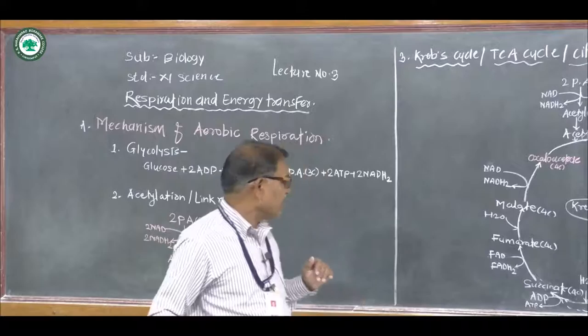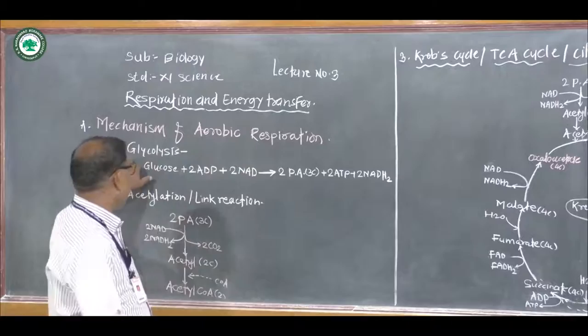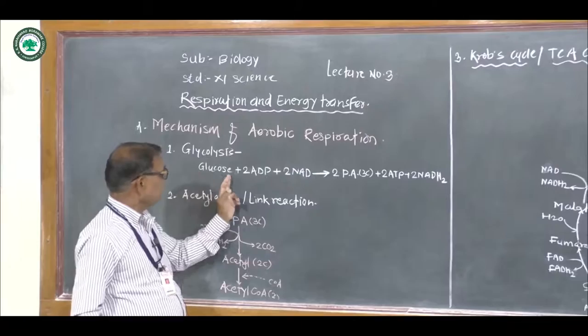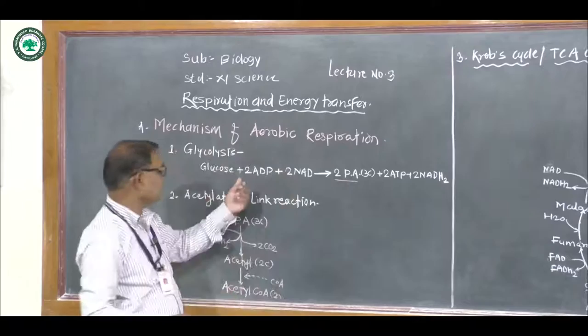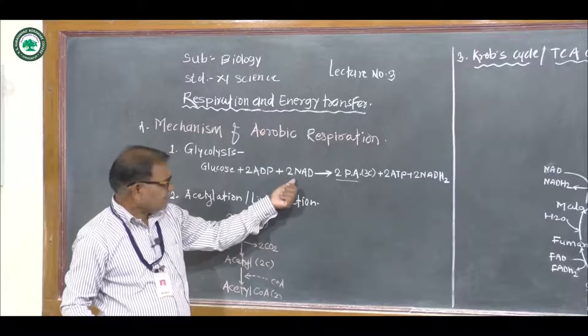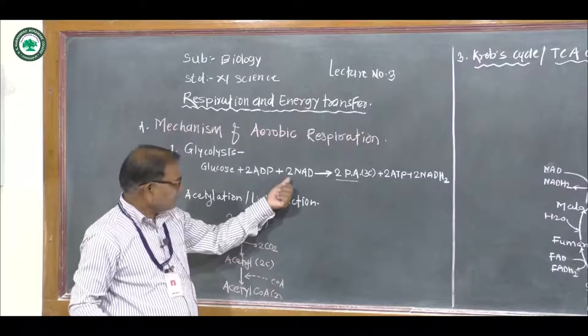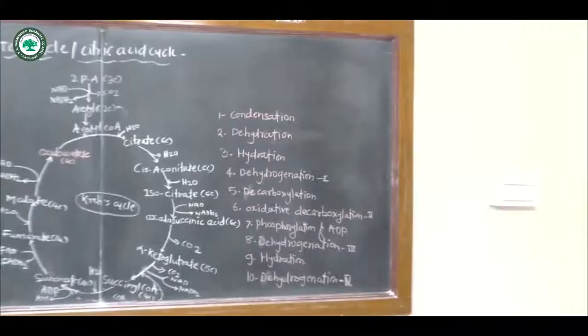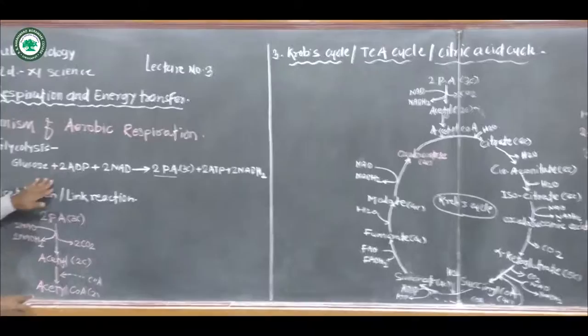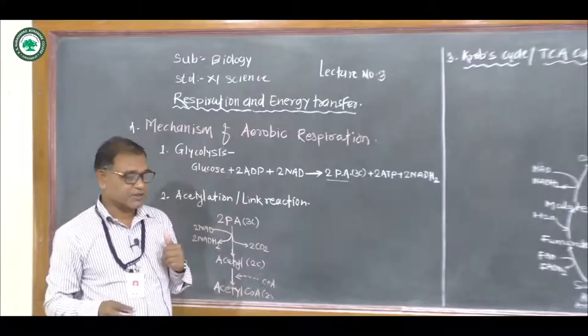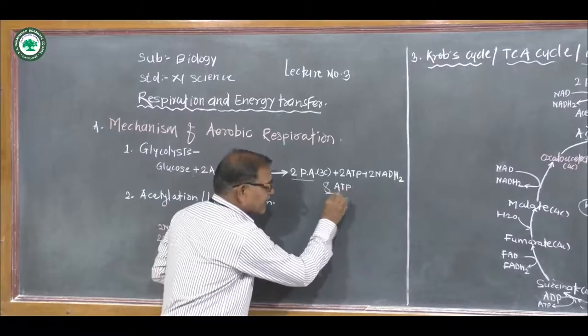In the mechanism of aerobic respiration, the first step is glycolysis. Glucose is converted into two molecules of pyruvic acid, using two ADPs converted into two ATPs, releasing hydrogen from the substrate and converting NAD into NADH2. The end product of glycolysis is two molecules of pyruvic acid, and 8 ATP is the net gain of glycolysis.